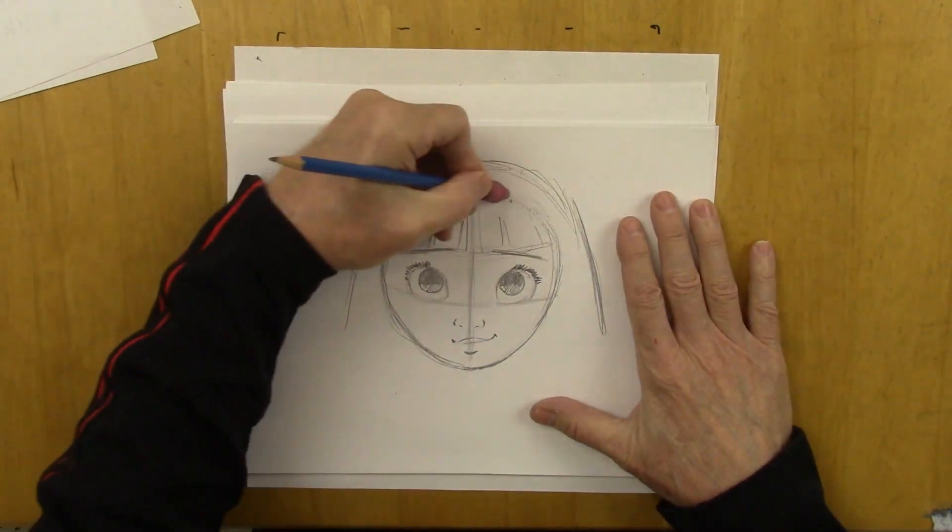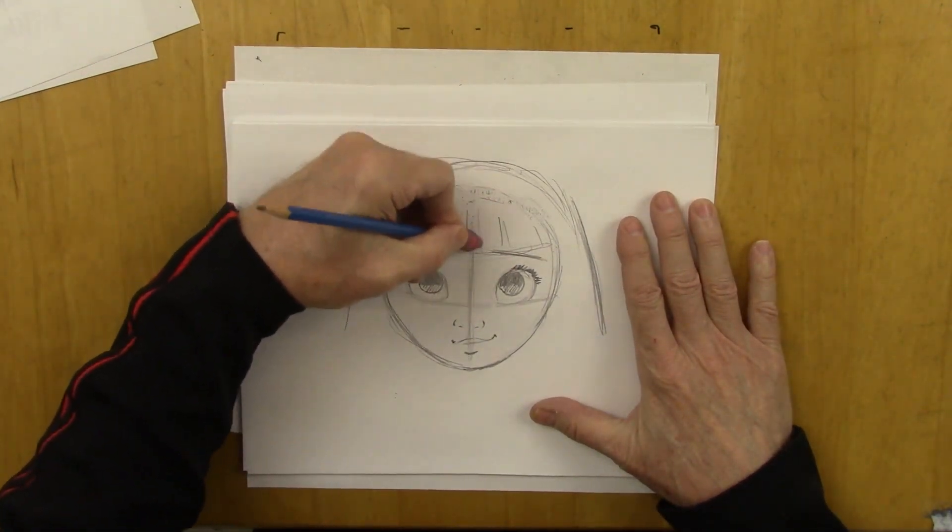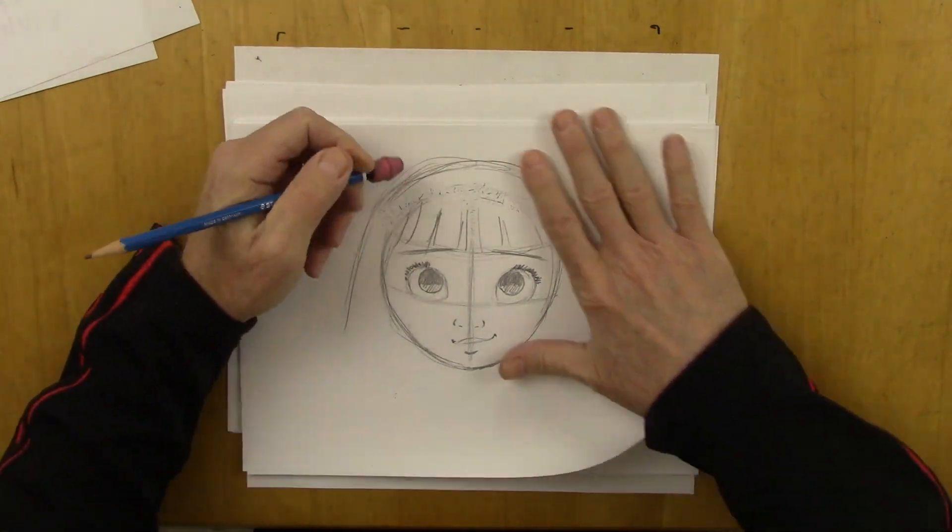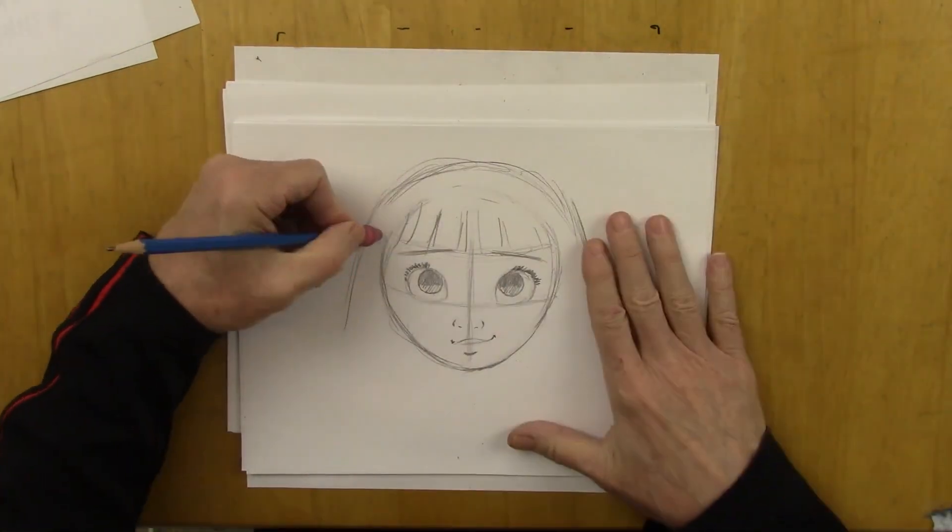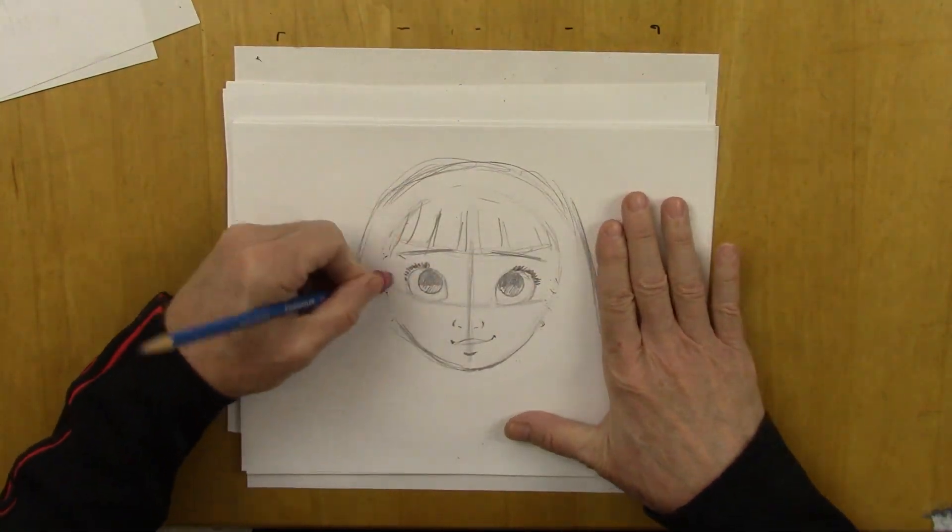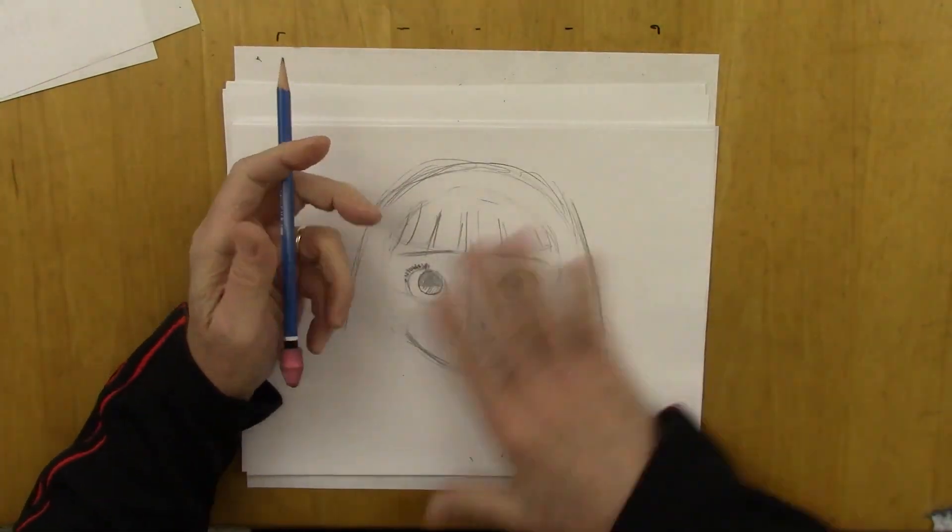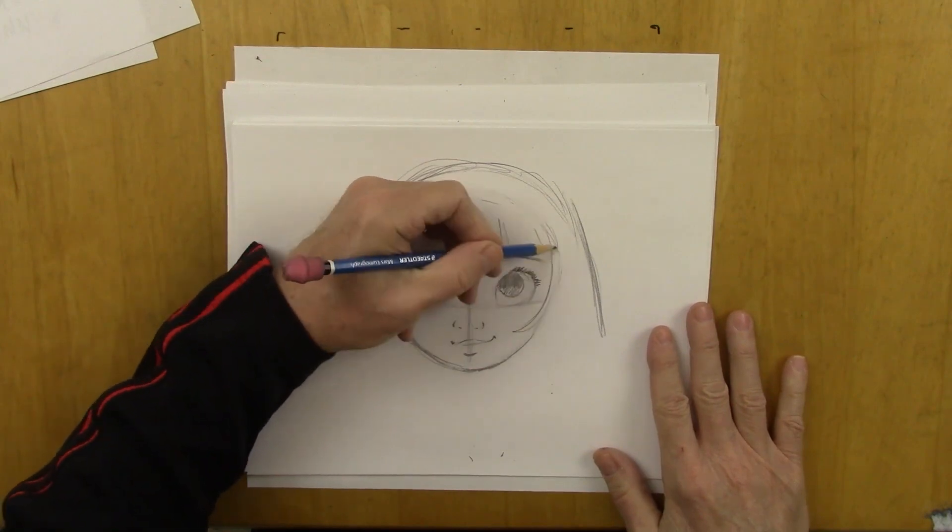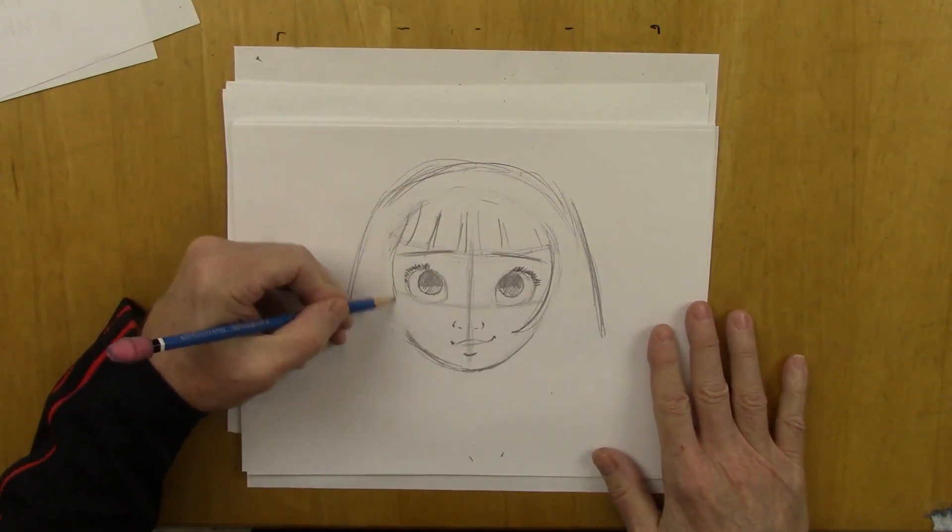And now I'm going to erase this part here which is the original head shape. So there's nothing confusing it. And I'm going to also erase right here along the sides. Because I'm going to create the hair so that it curls in like that. Kind of invades here. Invades the face.